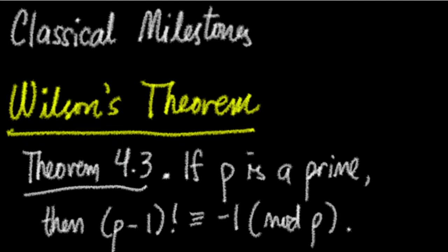Wilson's theorem is named after John Wilson, an English mathematician who was a student of the English mathematician Edward Waring, who described this as an algebraic conjecture by Wilson.